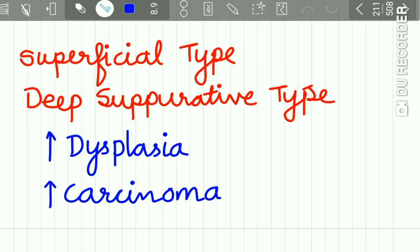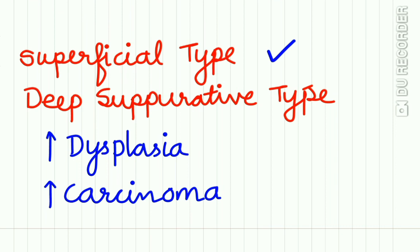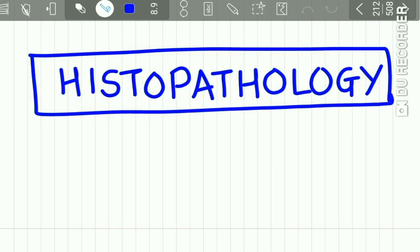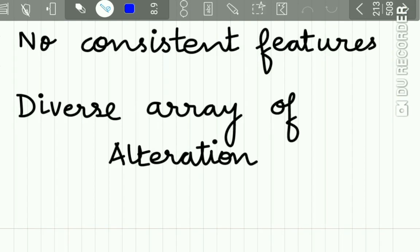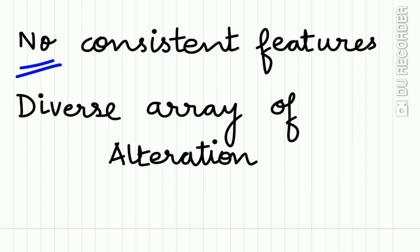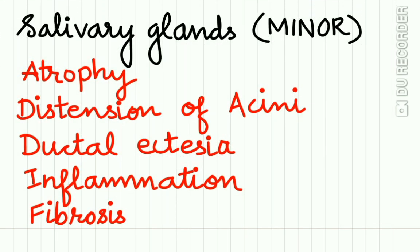Note that the superficial type and the deep suppurative type of Cheilitis Glandularis have an increased tendency to develop dysplasia and carcinoma. Regarding histopathology, there are no consistent histopathological features, but the lesion shows diverse alterations — the minor salivary glands may show atrophy, distension of acini, ductal ectasia, inflammatory changes, or fibrosis.